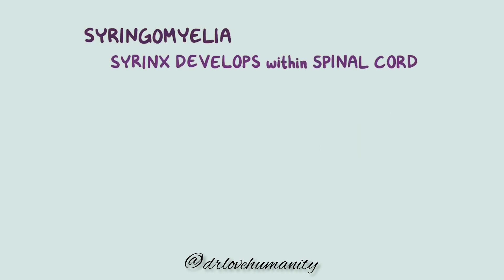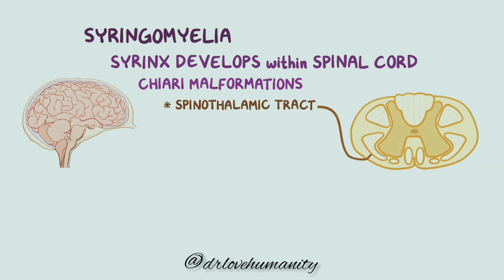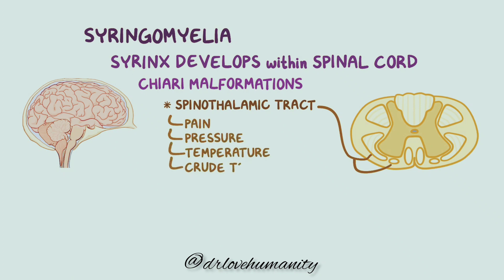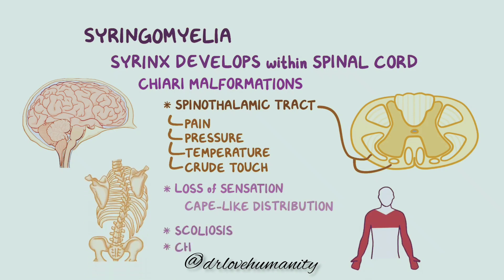As a quick recap, syringomyelia occurs when a fluid-filled cavity, or syrinx, develops within the spinal cord, and it is most commonly caused by Chiari malformation. The expanding cavity interferes with the spinothalamic tract, which is responsible for pain, pressure, temperature, and crude touch, and results in the loss of these sensations in a cape-like distribution along the arms and back. Syringomyelia is also commonly associated with scoliosis and Charcot joints.